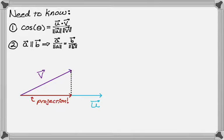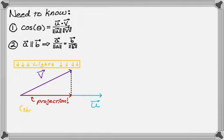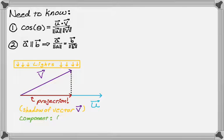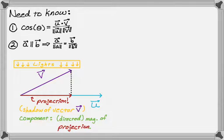I'm going to try to color code everything as I go through this. One way of thinking about the projection: imagine you put a bank of lights up above, some kind of light source going straight down, parallel to u. What you're really finding is the shadow of vector v from those lights. The projection is a vector, but its magnitude — we call that the component — the component of v along vector u. It's the directed magnitude of the projection, because if the angle between v and u is obtuse, the projection falls on the line containing u and the component would be negative, indicating it's in the opposite direction of u.